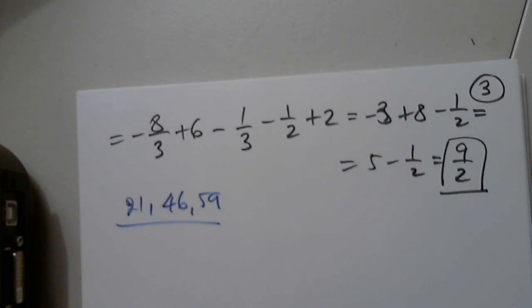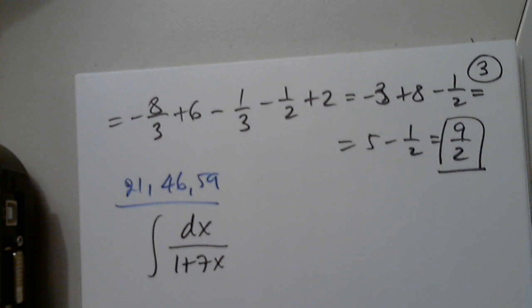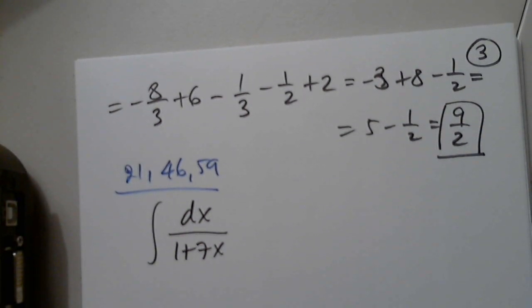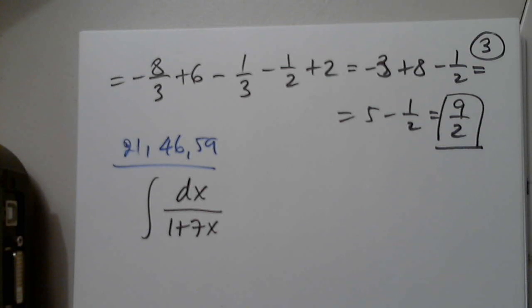Here's 21. So, this is the integral from dx over 1 plus 7x dx. Of course, it's up there, and they're telling us, of course, x cannot be negative 1 seventh, because if it is, the function is undefined. Good. Any suggestions? It's okay if you're wrong. Just tell me how would you attack this problem.